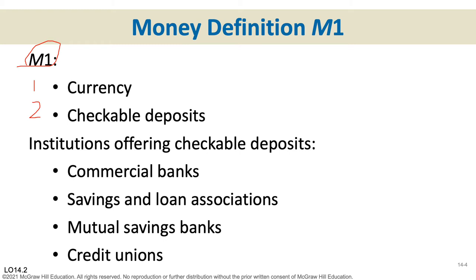Checkable deposits is the money in our checking accounts. It doesn't matter who holds your checking account — commercial bank, savings and loan, credit union — it's just the money in your checking account. Notice it's not the money in your savings account. The reason for that is M1 money is the most liquid form of money. Liquid means how fast it can be converted to cash. Currency is the most liquid form, and then money in your checking account. There are no restrictions on getting money out of a regular checking account — you can empty it if you want to.